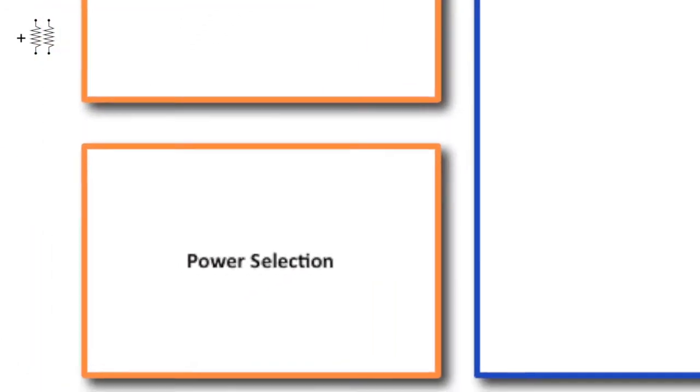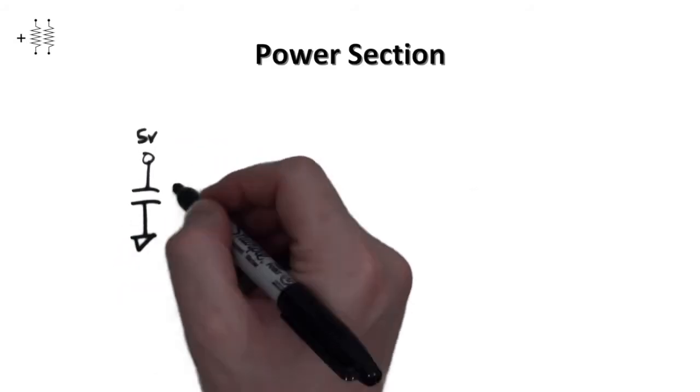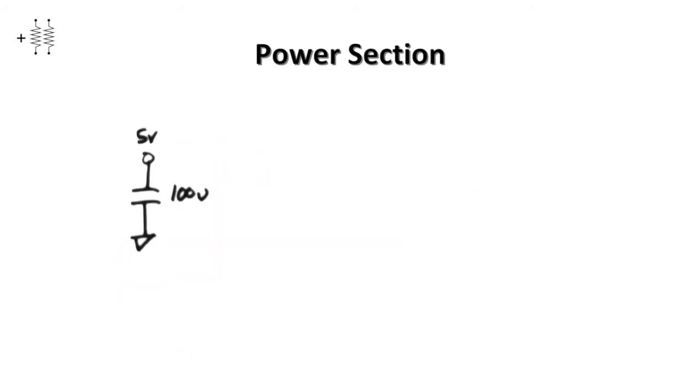The very first part that we're going to look at is the power section. In that power section we're going to have decoupling capacitors. A future video will look at what decoupling caps are. For now, make sure your circuit has some capacitors.